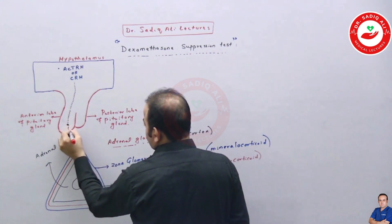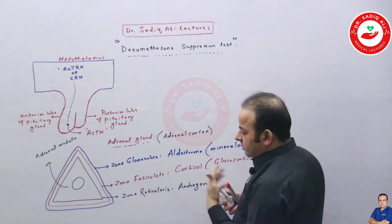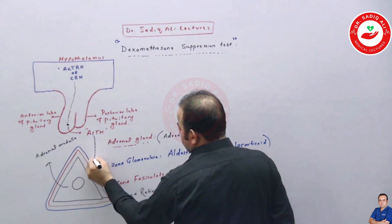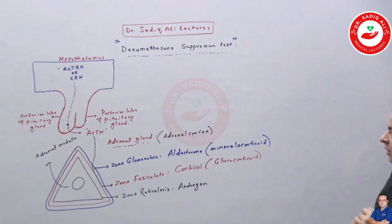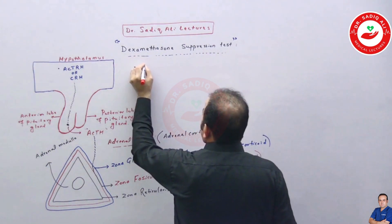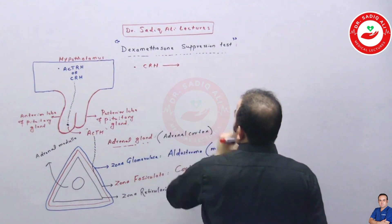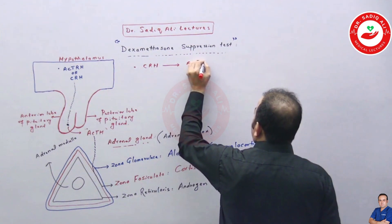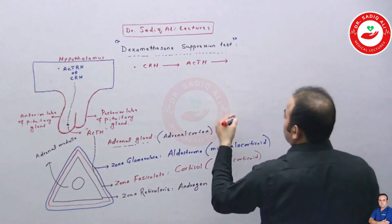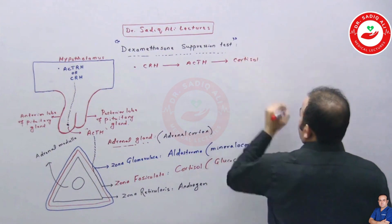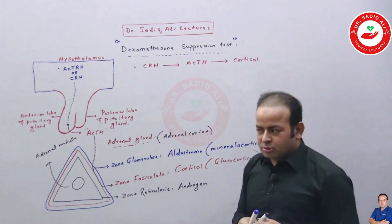From the anterior pituitary, CRH stimulates the release of another hormone called ACTH — adrenocorticotropic hormone. ACTH travels via the blood to the adrenal gland and acts mainly on the middle layer, the zona fasciculata, causing it to release cortisol. This basic knowledge is essential before understanding the dexamethasone suppression test.